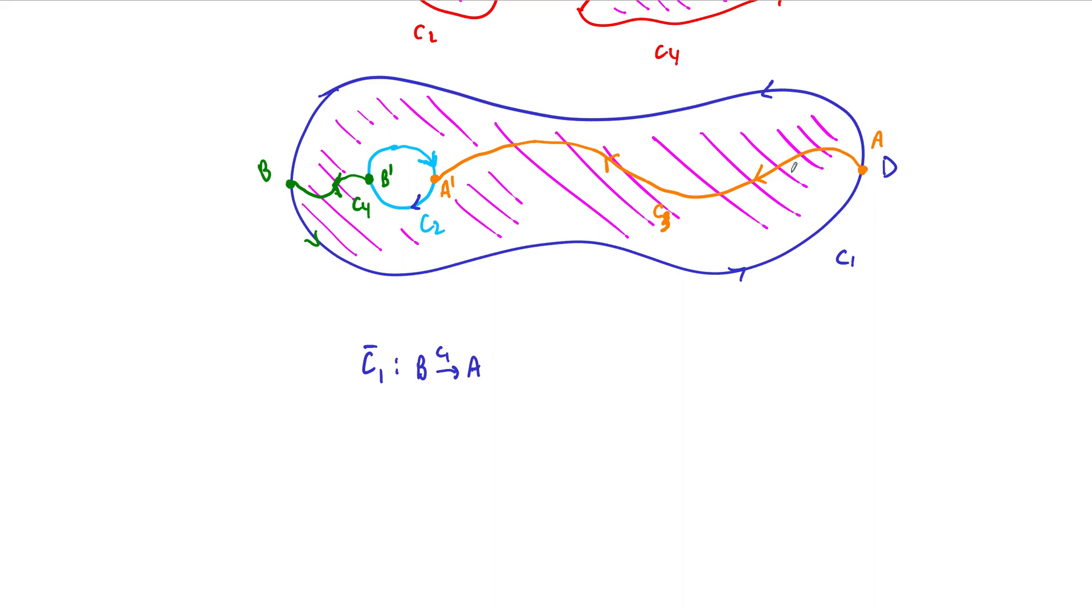But then I'm going to make a left-hand turn and I'm going to take then this portion C3 over to A prime. And then from A prime, I'm going to pick up C2. So this is kind of convoluted in some ways, but C2 over to B prime, right? And then I'm going to close the curve off by taking B prime to B, and that's by taking C4, I should say, B prime to B. And in doing so, what have I done?